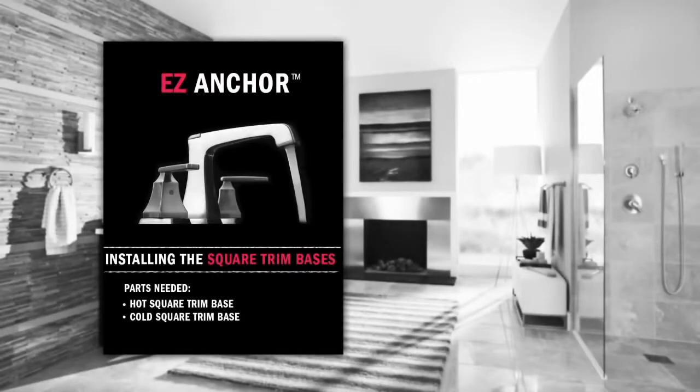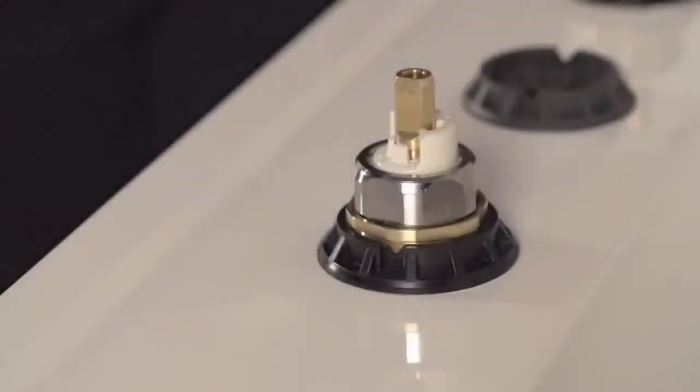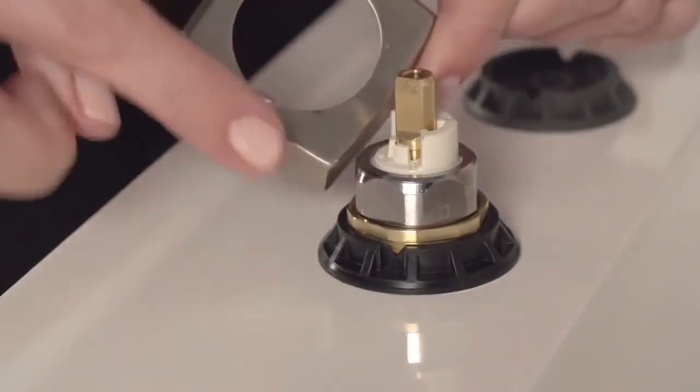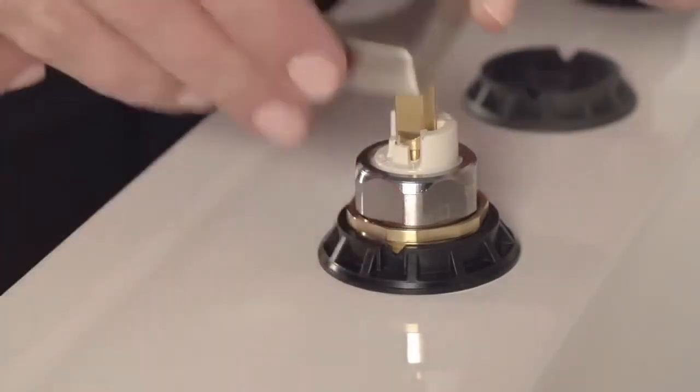Once the hot and cold valves are in place, find your square trim bases and attach them to the hot and cold anchors so that the trim base tabs and anchor slots fit together like puzzle pieces.